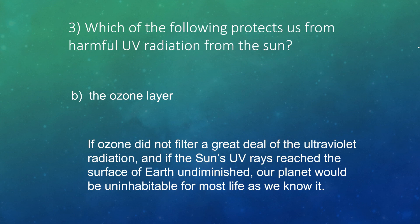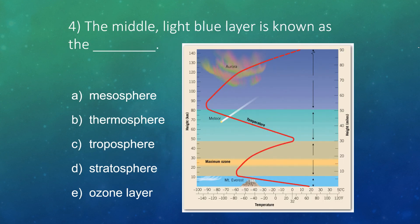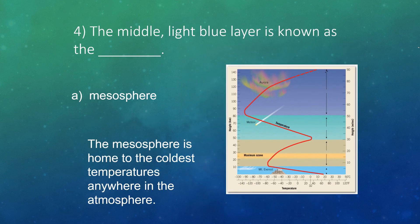I think we have one more. Here, the middle light blue layer is known as what? That would be the one where the meteor is. Well, here we're seeing a huge decrease in temperature. This is the mesosphere. It's the home to the coldest temperatures anywhere in our atmosphere.